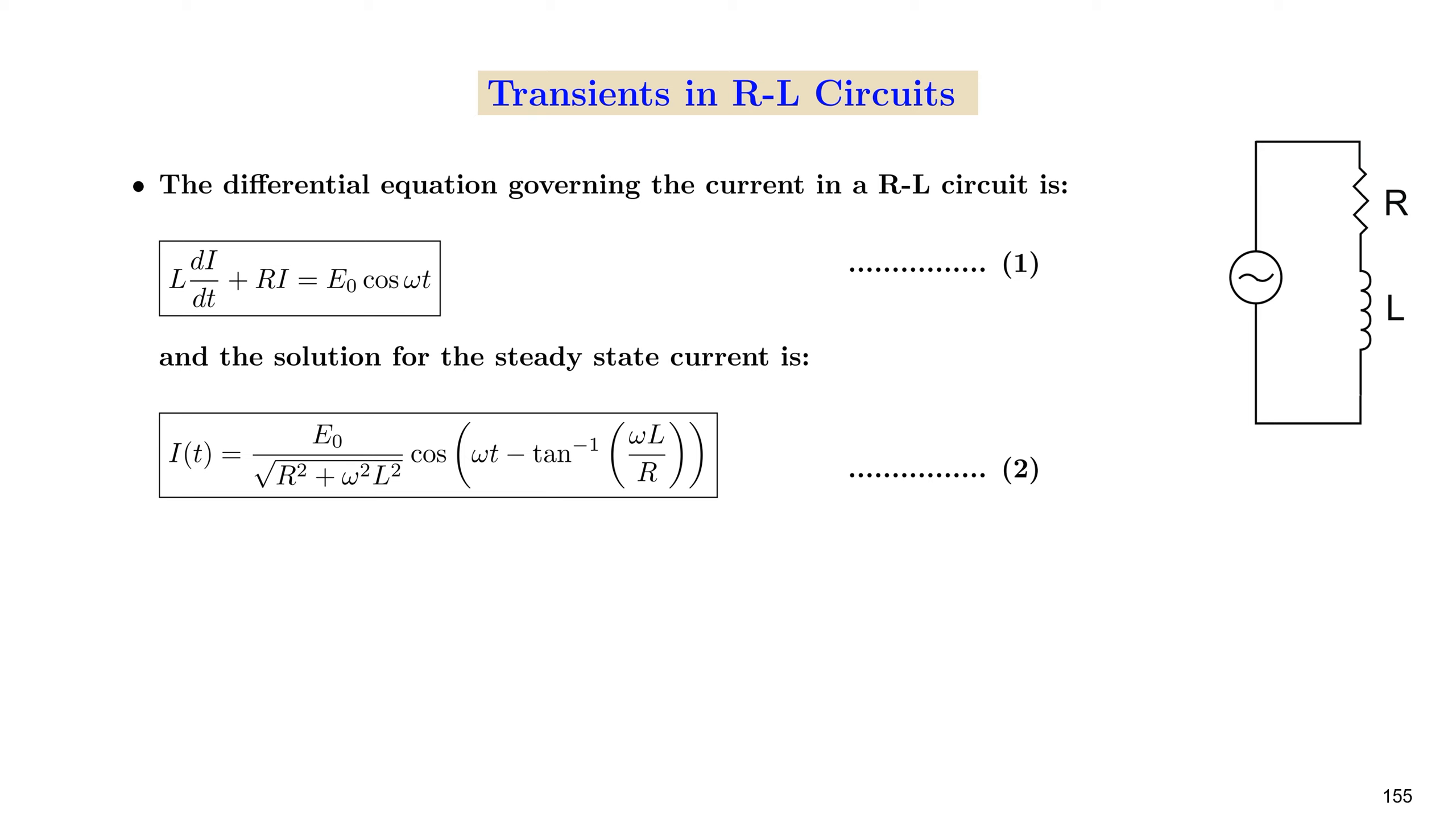Let us consider the differential equation that we wrote for an RL circuit which is connected to an AC source E0 cos(ωt). The differential equation that we framed was L(di/dt) + Ri = E0 cos(ωt).